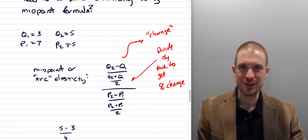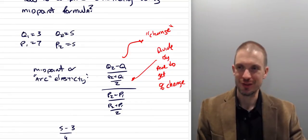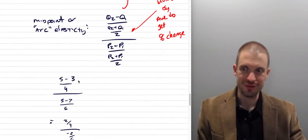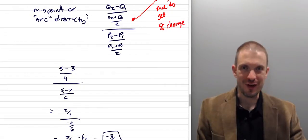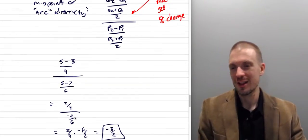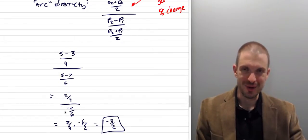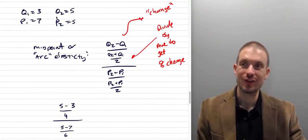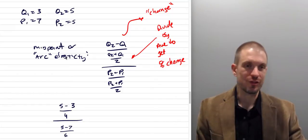I'll leave this as an exercise, but you could rearrange and compute the elasticity the opposite way — treating (5,5) as point one and (3,7) as point two. Then Q2 minus Q1 becomes three minus five, which is negative two, divided by four — the average doesn't change. And P2 minus P1 becomes seven minus five, positive two, divided by six. We'd then have negative two-fourths divided by two-sixths, which is still negative three-halves.